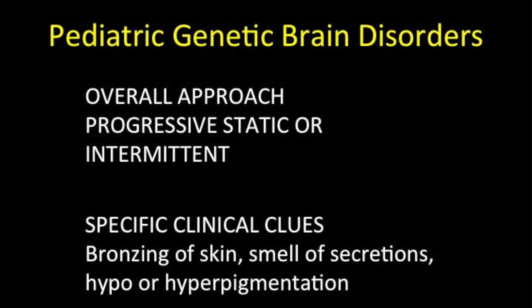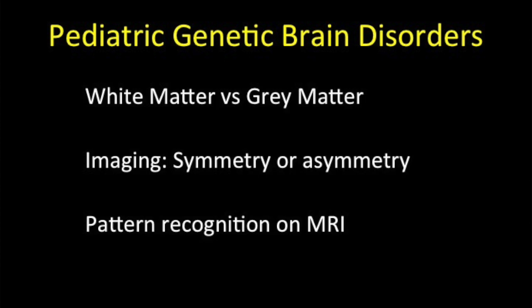Ask the pediatrician or pediatric neurologist for specific clinical clues — for example, whether the child has skin bronzing, peculiar odor to body secretions, or any hypo- or hyperpigmentation — as these point toward certain specific clinical conditions. When looking at MRI, assess whether there is primary white matter affection, primary gray matter affection, or affection of both almost equally. Also look for whether the disease is symmetric or asymmetric, since most disorders are symmetric, and the few asymmetric ones help you clinch the diagnosis very easily.